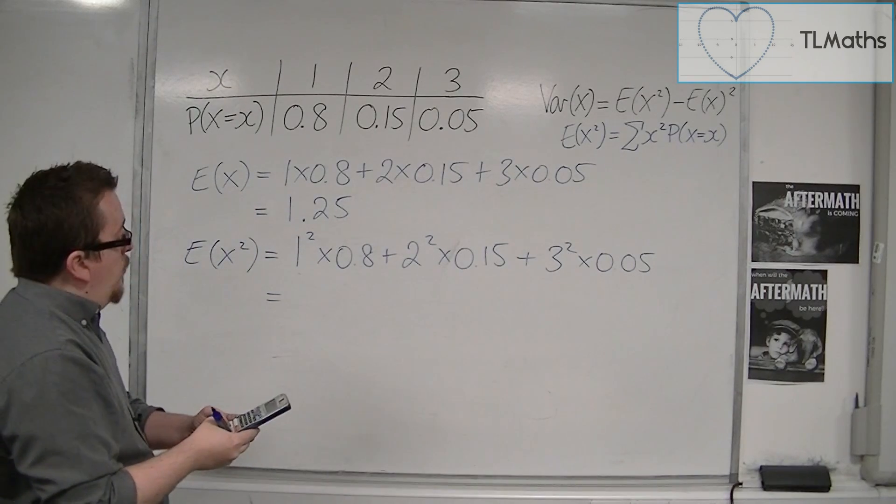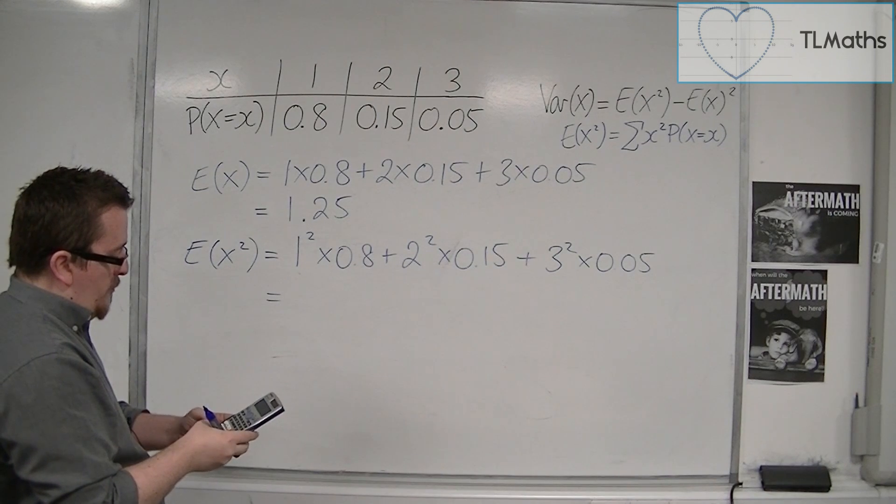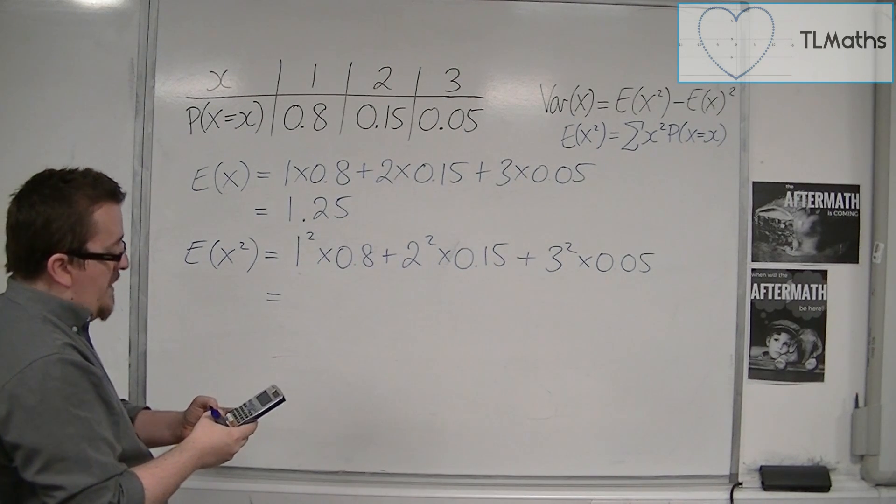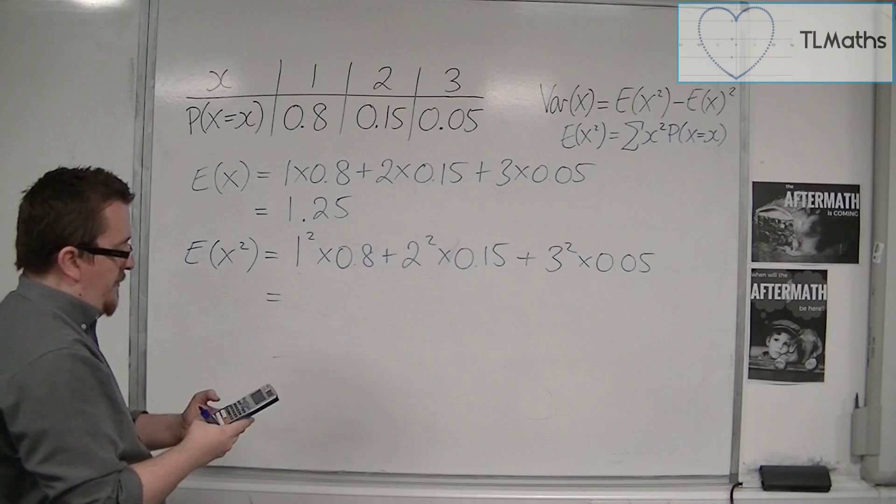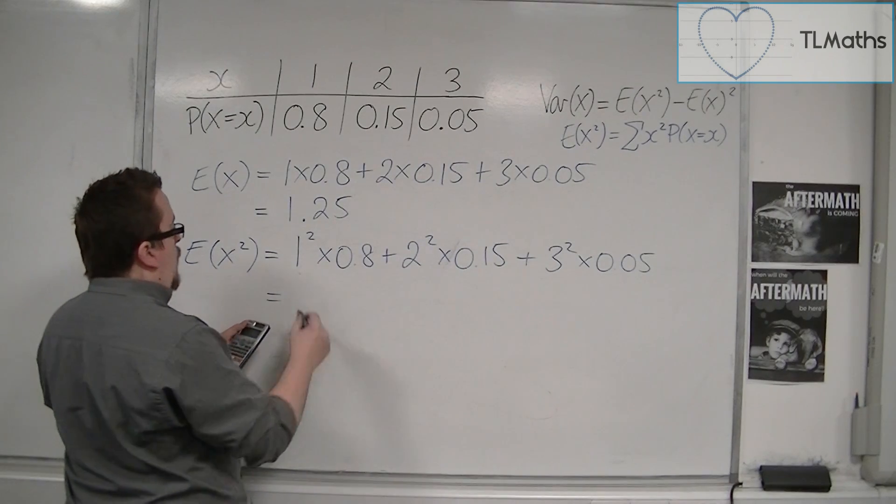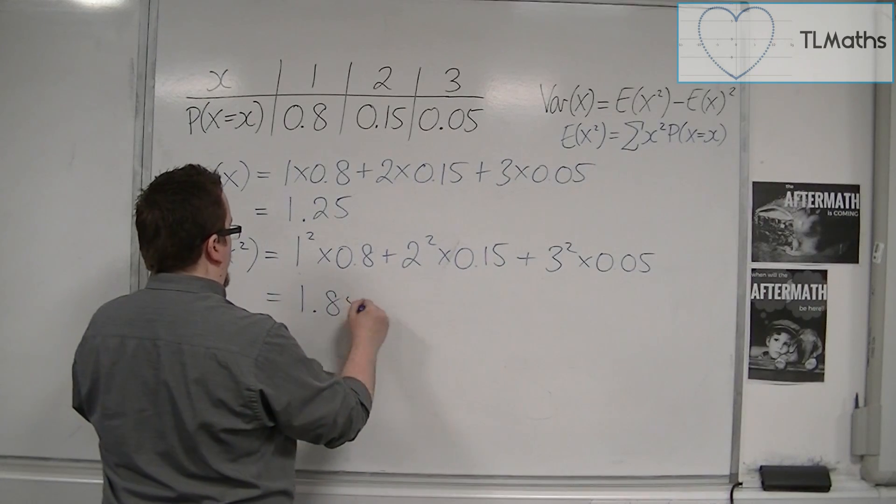We have 1 times 0.8 plus 4 times 0.15 plus 9 times 0.05. That gets me 1.85.